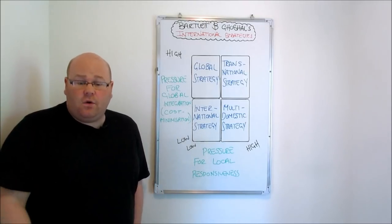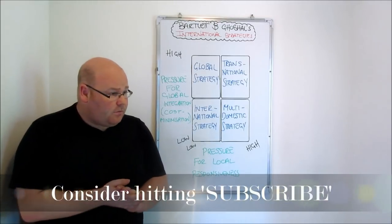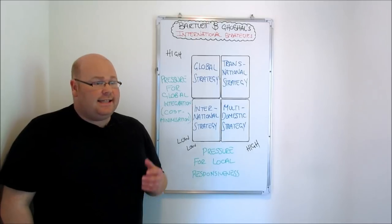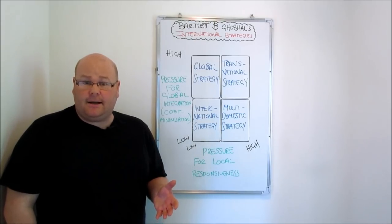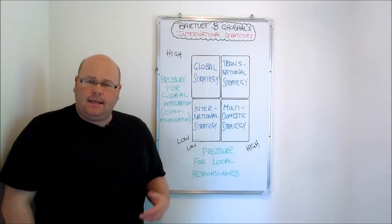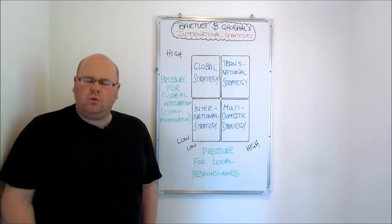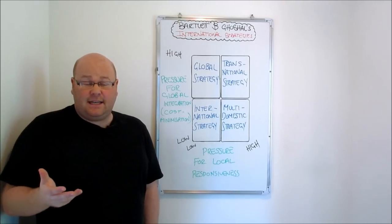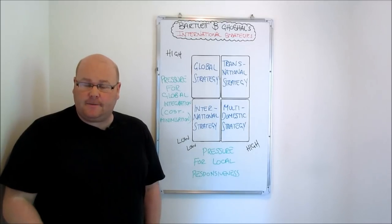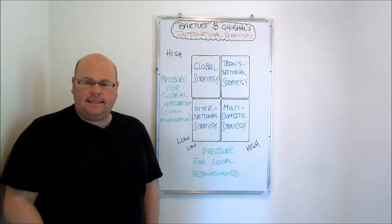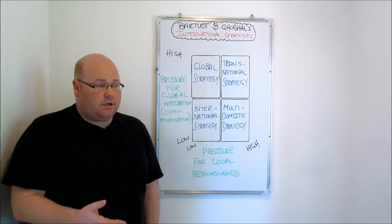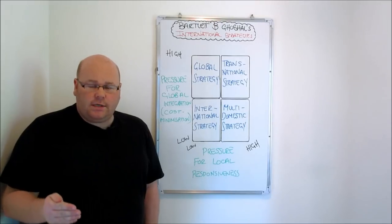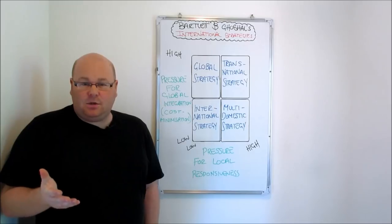This gives us four different strategies. The first is the international strategy, which Bartlett and Ghoshal said might be adopted by firms where the pressure for local responsiveness is low — they can take standardized products from their domestic market and sell those overseas. The pressure for global integration is also quite low, so the firm can invest more in localized decision-making, regional production, regional supply chains, and maybe more regional marketing strategies or R&D functions.